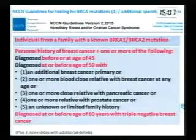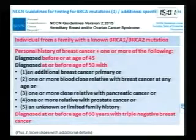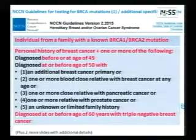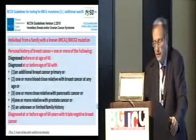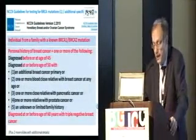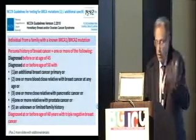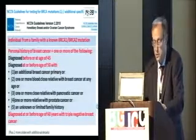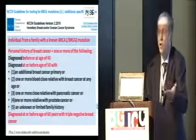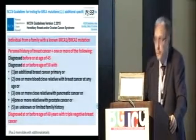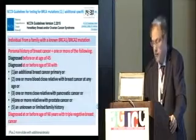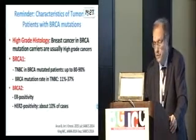More detailed recent NCCN guidelines on who should be referred for testing: personal history of breast cancer plus one or more factors — like age at diagnosis at or before 45, or if diagnosed at or before 50 with an additional breast cancer primary, one or more close blood relative, one or more close relative with pancreatic cancer, or one or more relative with prostate cancer, or unknown or limited family history. Also, patients diagnosed at or before age 60 with triple negative breast cancer are now recommended for BRCA testing.